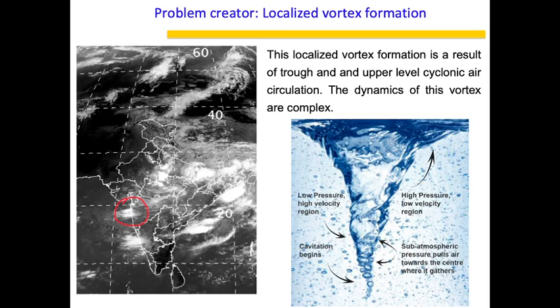These submesoscale systems have a very small timescale — they form very quickly and also dissipate very quickly. In that small amount of time, the kind of intense rainfall they can produce is very high. That's why they are problem creators, and most of the time the models have not captured the event by the time it is over. During monsoon, these kinds of submesoscale systems form very often.